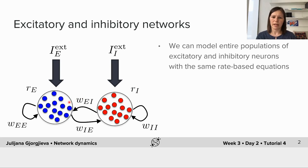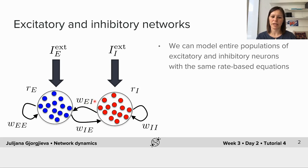These neurons are interconnected with recurrent connections. WEE denotes the strength of the connection of the excitatory population with itself, and WEI denotes the strength of the connection from the inhibitory to the excitatory population. We use these subscripts to denote the pre and post synaptic population. The convention is that the first term in the subscript denotes the post and the second denotes the presynaptic population. So WEI means the connection goes from the inhibitory to the excitatory population.